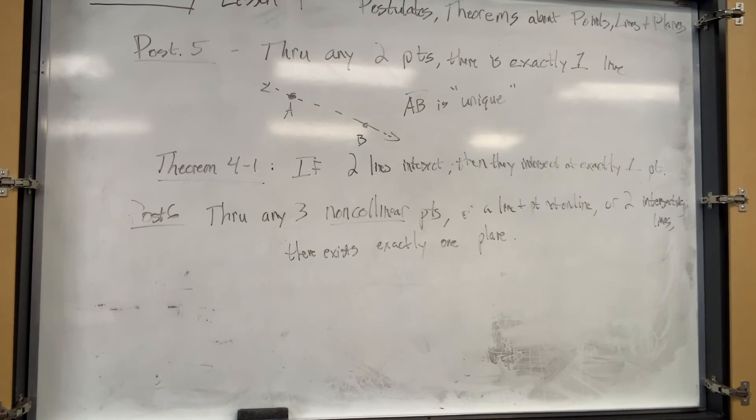Postulate nine: a line contains at least two points, a plane contains at least three non-collinear points. There's an infinite number of non-collinear points on a plane, just like there's an infinite number of points on a line.